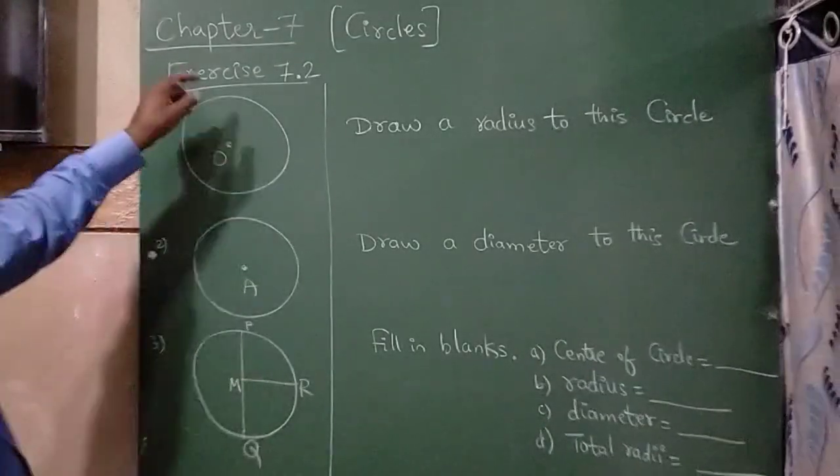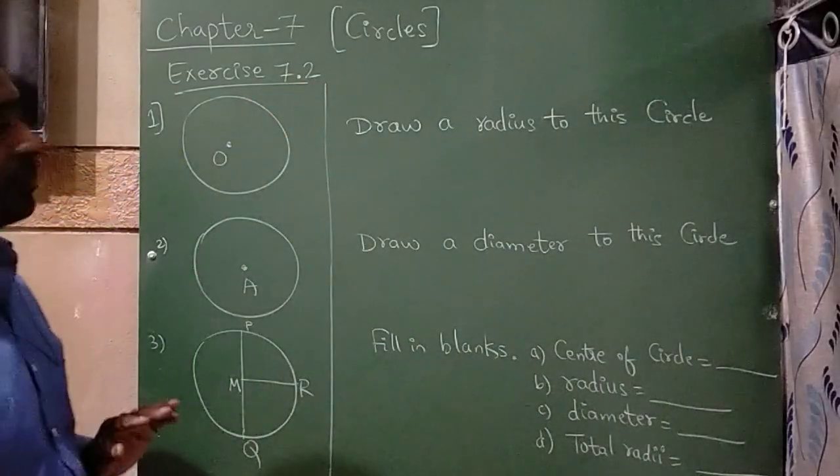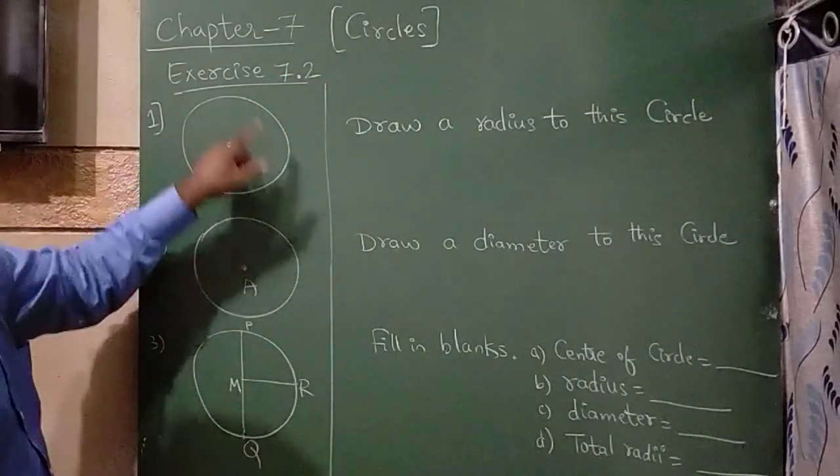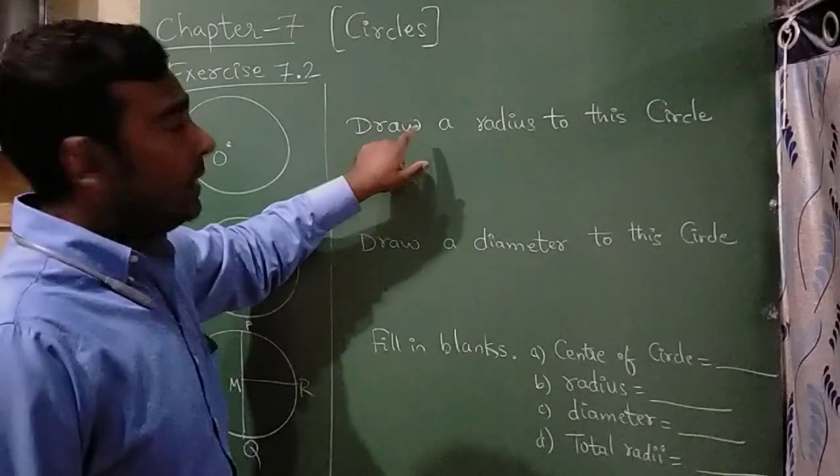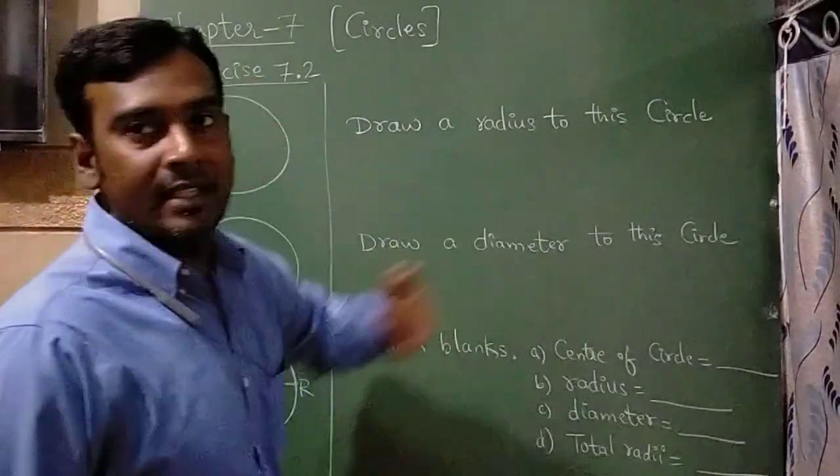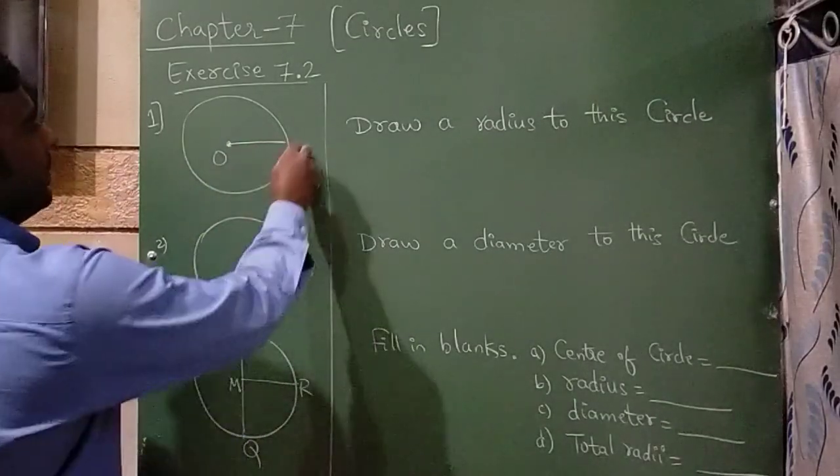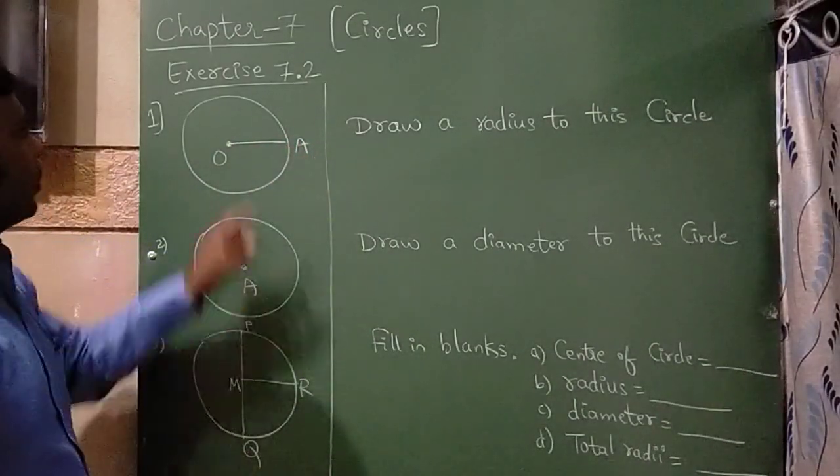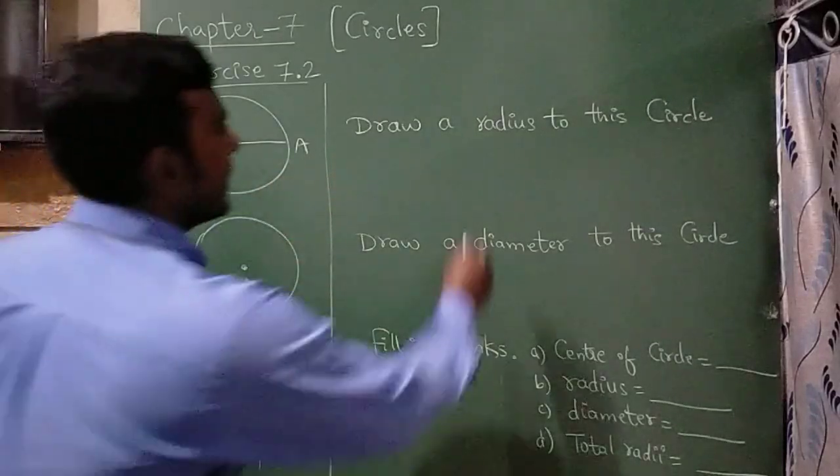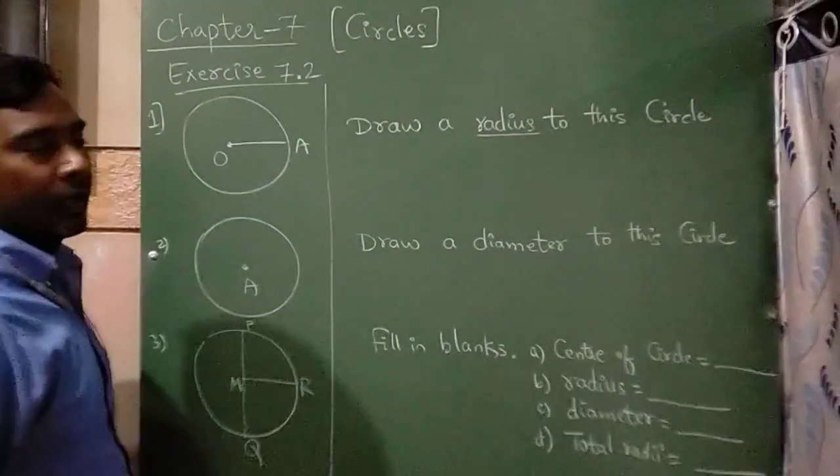The next exercise is 7.2. The first question is, they have drawn a circle here. They are telling draw a radius to this circle. So from here I will draw a line. I will name this as A. So from O to A is called as a radius.